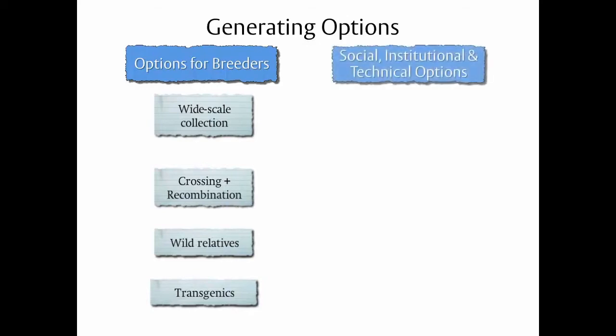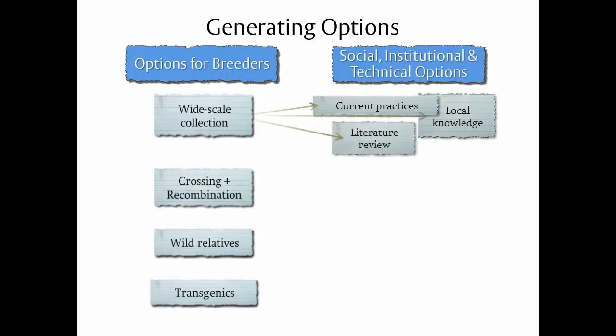If we think about a broader collection of social, institutional, and technical options that we might study, then I believe there are parallels to each of these steps. If we think about a wide-scale collection, then what we're talking about is looking broadly at the current practices, using local knowledge and interrogating the global literature. If we think about crossing and recombination, we can do something similar by, for example, arranging exchange visits between farmers working within different contexts. And we also have exchange visits, of course, between scientists. And these days, there are many ways in which scientists are able to exchange ideas other than having a meeting through various networks.